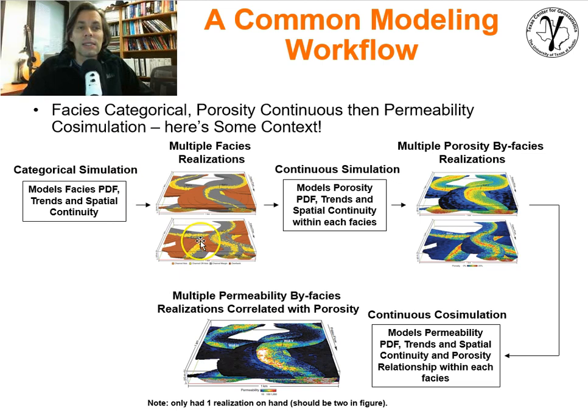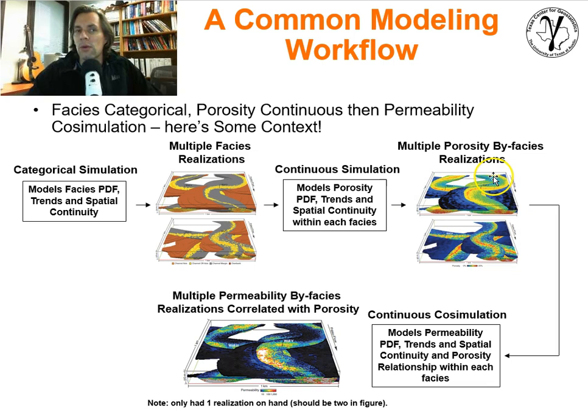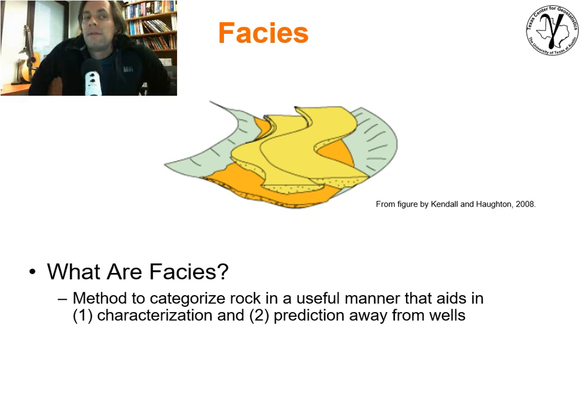So we're building spatial models that are now accounting for multivariate relationships, and this is very important and very powerful. We have facies, and within the facies we will have porosity, and then within the facies we will have permeability — constrained such that we honor the bivariate relationship with the previously simulated porosity. This is the overall type of workflow. But let's go back and talk more about facies.